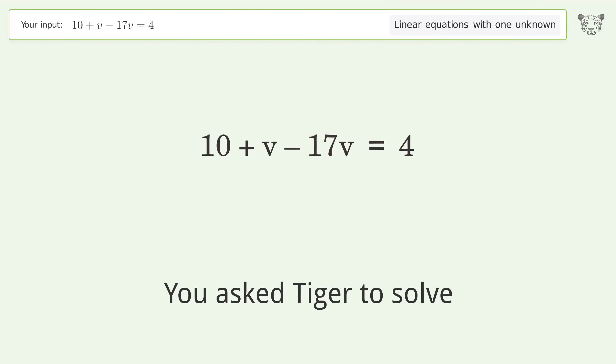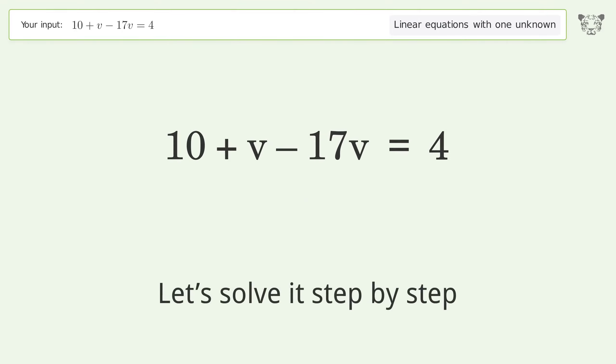You asked Tiger to solve this linear equation with one unknown. The final result is v equals 3 over 8. Let's solve it step by step. Simplify the expression.